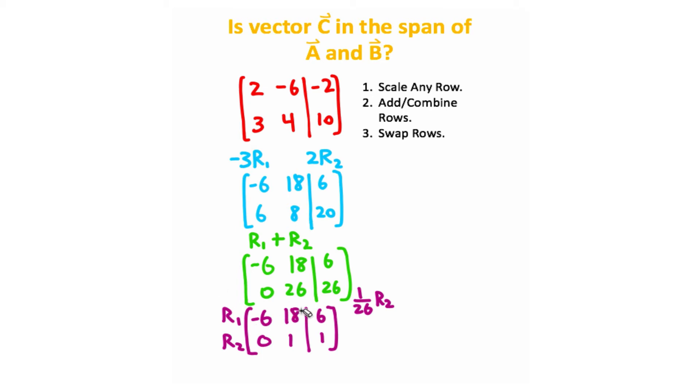Now I want to get a zero up here, so the way I'm going to do that is by taking row two, scaling it by negative eighteen, and adding it to row one. Now since we're adding this row to this row, row two is not going to change, but row one is. So if I do this step, I should get this matrix right here. Notice that negative eighteen times zero plus negative six is still negative six. Negative eighteen times one plus eighteen will give you this zero, and then negative eighteen times one plus six is going to give you negative twelve.